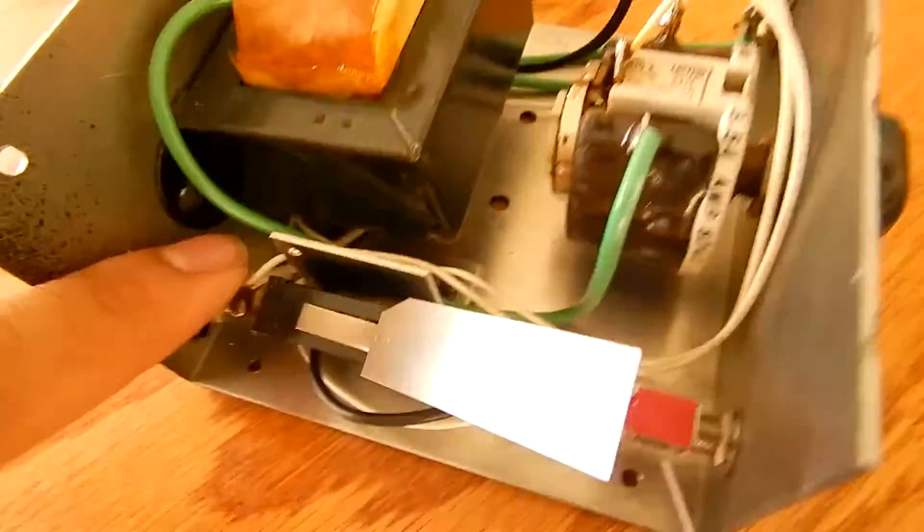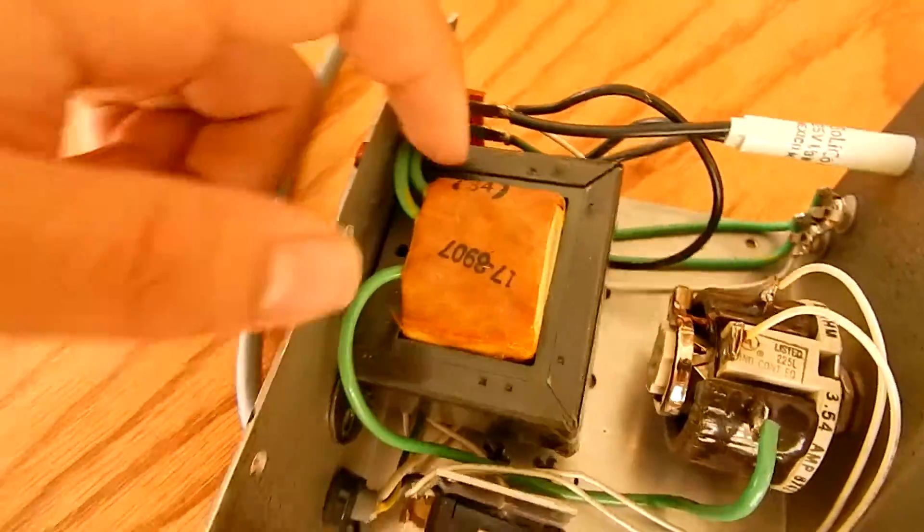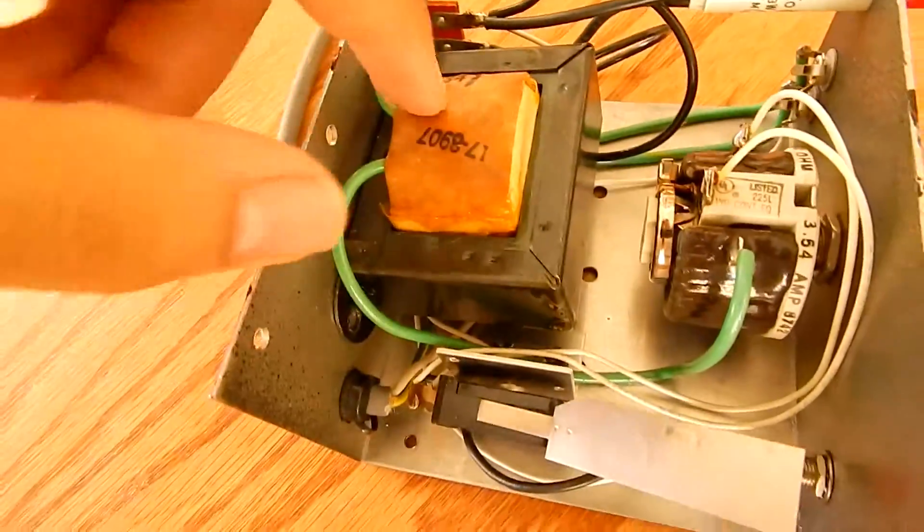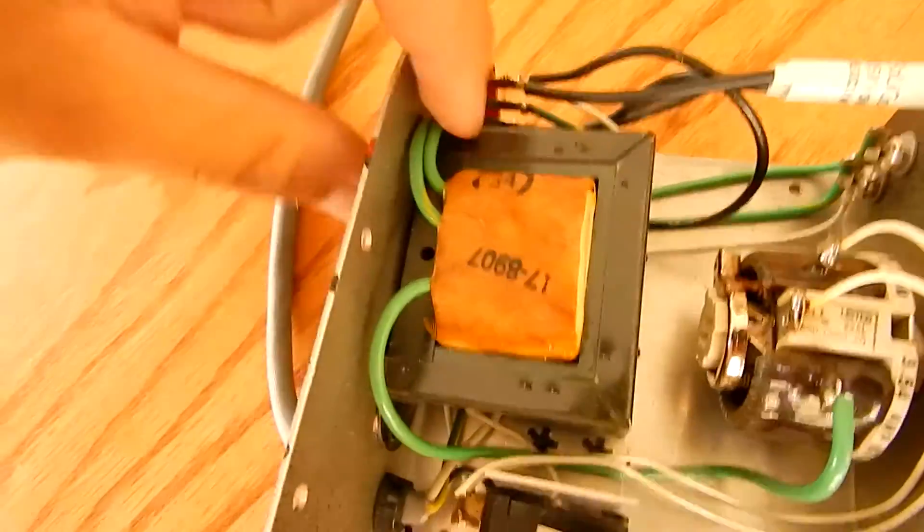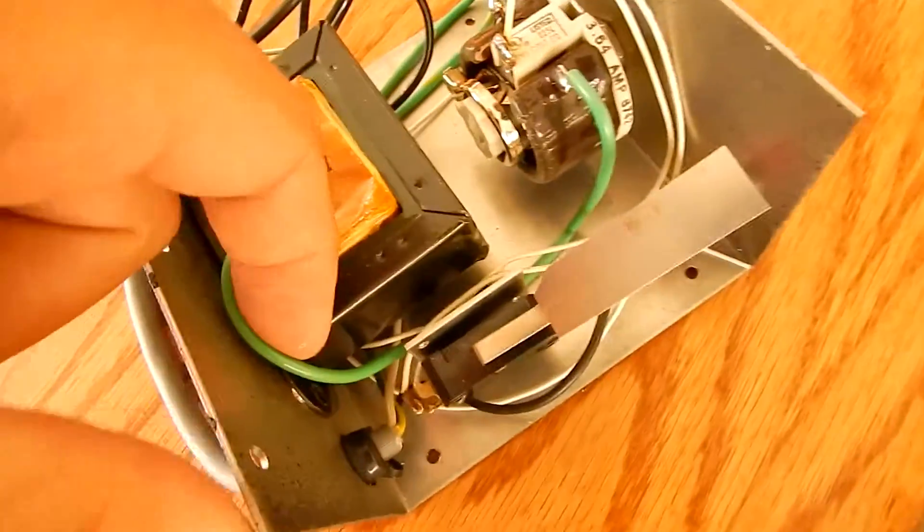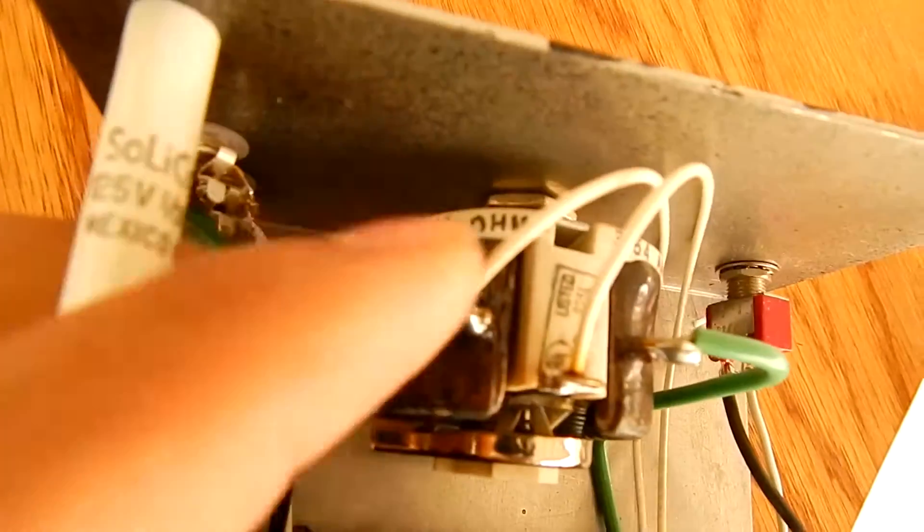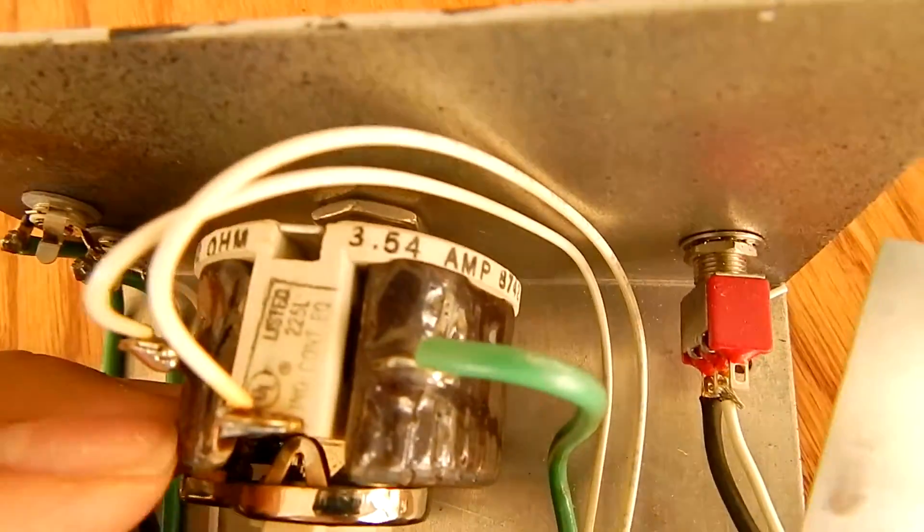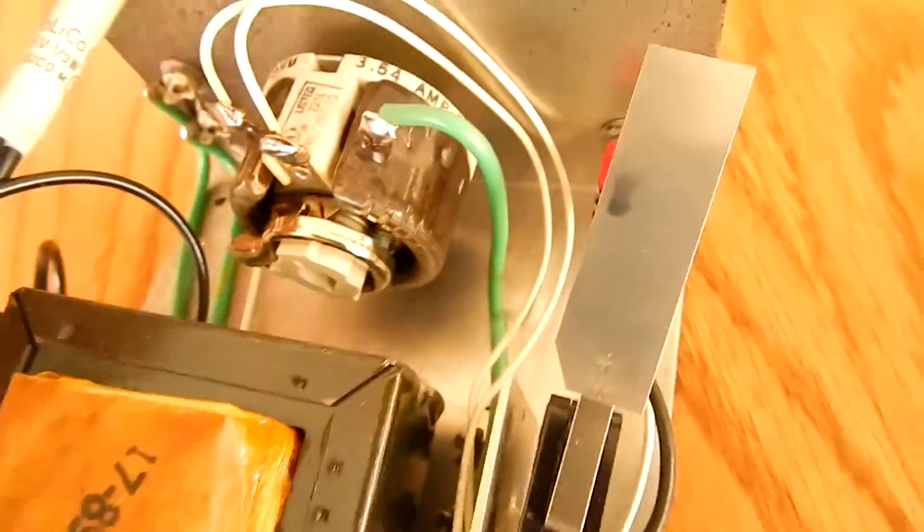So from there we know that this side is our primary, so our 110 volt side, and this is our secondary, so this is going to be our low voltage, high current, presumably. Now there's two taps, one tap goes this way into this rheostat, which is a 2 ohm rheostat, which is pretty crazy, capable of 3.54 amps, UL listed, surprisingly. That's pretty awesome.